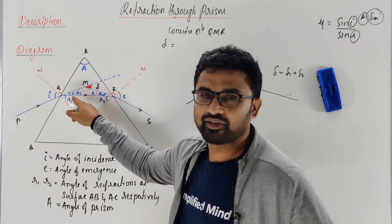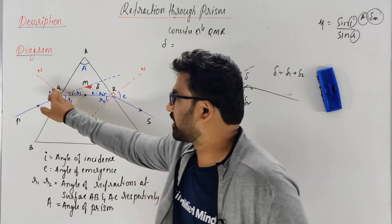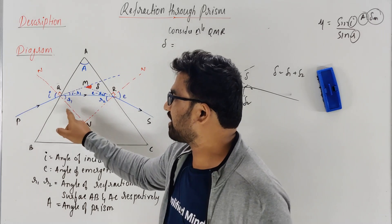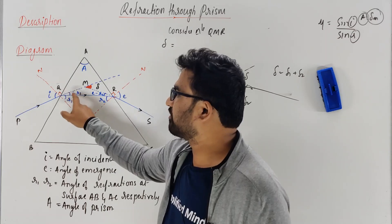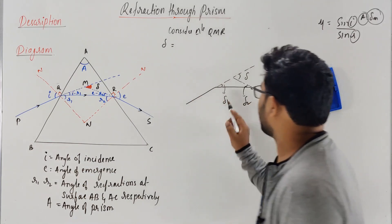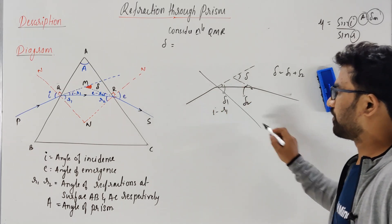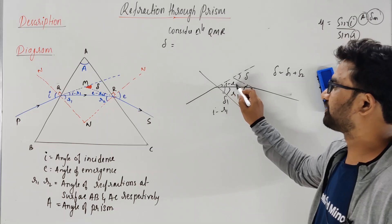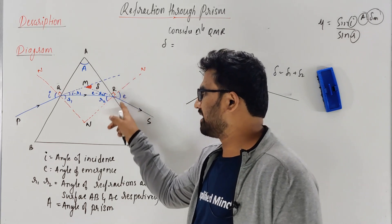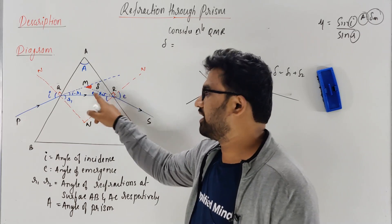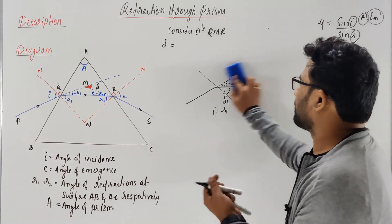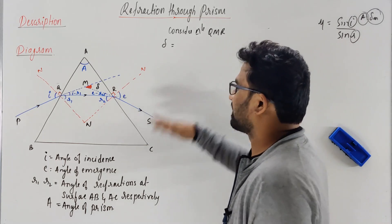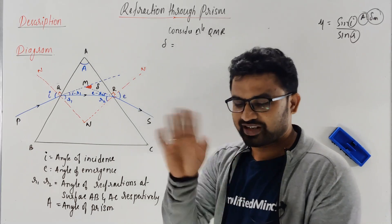So delta1 is written as I minus R1. Why? Because the full angle is I, and R1 is the refracted part, so the remaining deviation is I minus R1. Similarly, delta2 is E minus R2. So the total deviation can be written directly as I minus R1 plus E minus R2, which gives delta equals I plus E minus R1 plus R2.